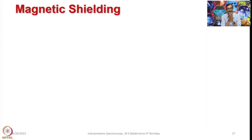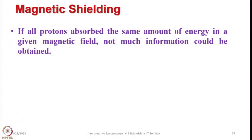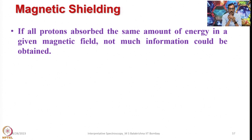What is magnetic shielding? This is a very important term when it comes to the utility of NMR in elucidating the structure of molecules. If all protons observed the same amount of energy in a given magnetic field, not much information could be obtained. For example, in ethanol we have a CH3 group, a CH2 group, and an H in OH. If all of them observed the same amount of energy, you would get a broad signal that would not help in understanding the different groups present.